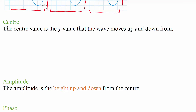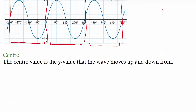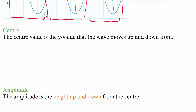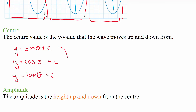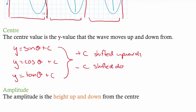We also have something called the center. The center value is just the y-value that the wave moves up and down from. In our example the center value is zero — you can see it's going up and down from that zero line. It's your c value, so y equals sine theta plus c, y equals cos theta plus c, y equals tan theta plus c. A positive c means the graph has shifted upwards — so if it's plus one, the wave oscillates around one. A negative c shifts it downwards, so negative one moves the whole graph down to negative one.